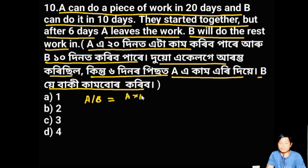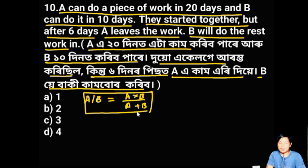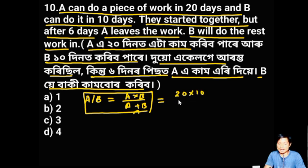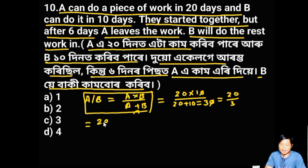Using the formula: A into B divided by A plus B. We add the value of 20 plus 10, then we add 30, then we add 20 minus 20, we get 3. So you have to determine which type of value this gives.